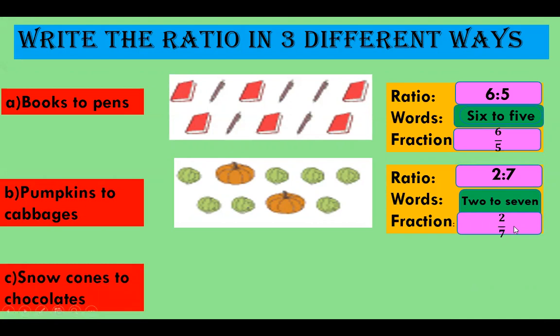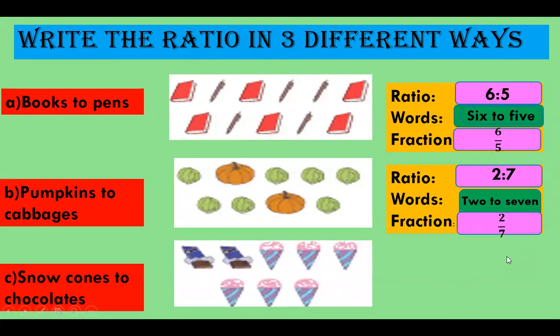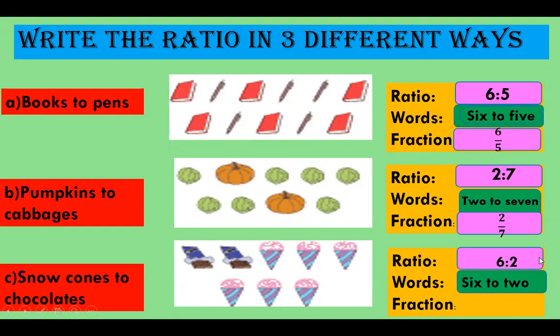Next, snow cones to chocolates. Find the ratio, words, and fraction. The ratio is 6 is to 2. In words we say 6 to 2 and the fraction is 6 by 2.